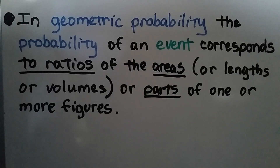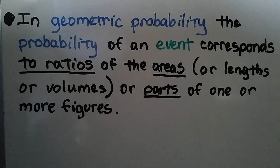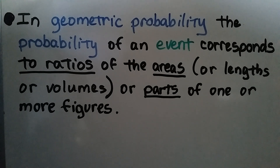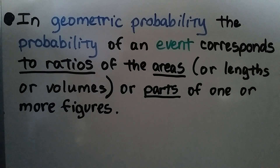This lesson is going to lead us into our next lesson, 13.2, when we talk about probability. In geometric probability, the probability of an event corresponds to ratios of the areas, or lengths or volumes, or parts of one or more figures.